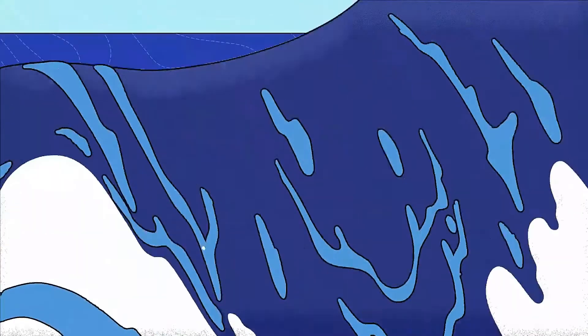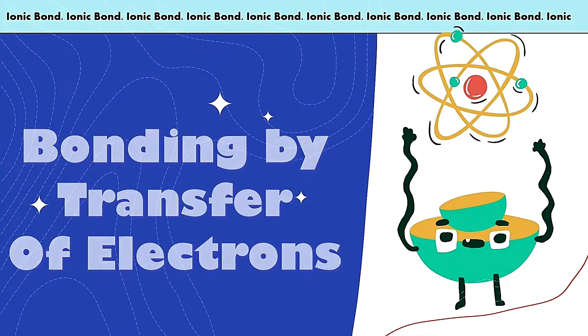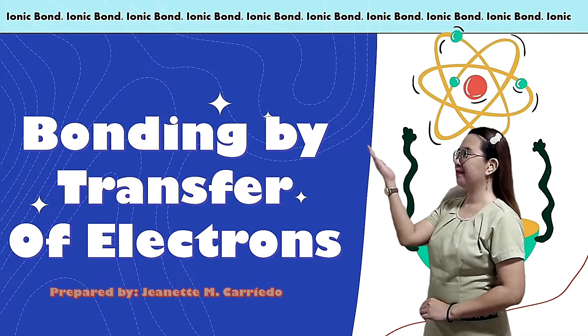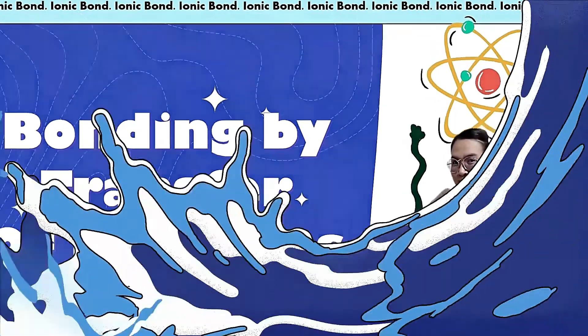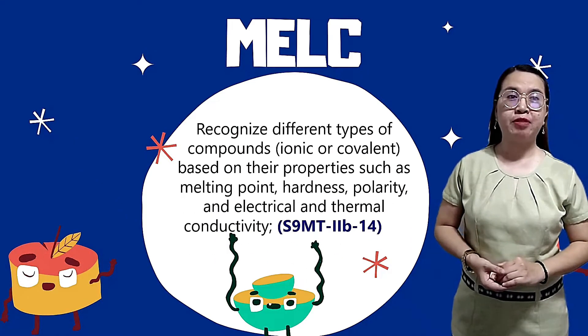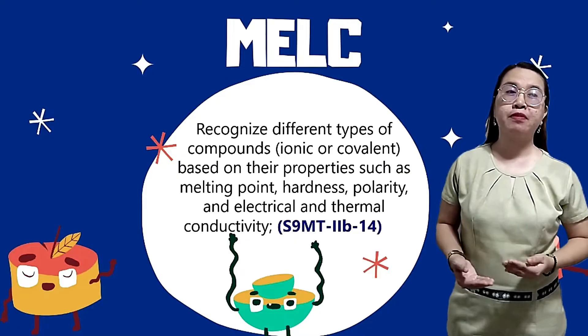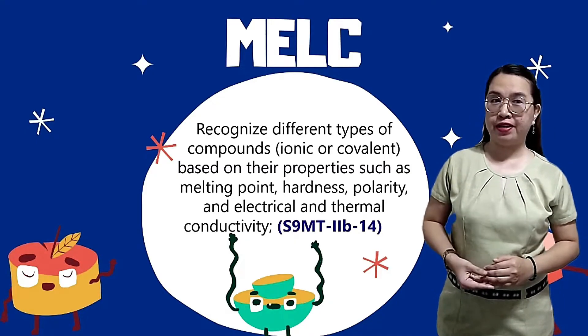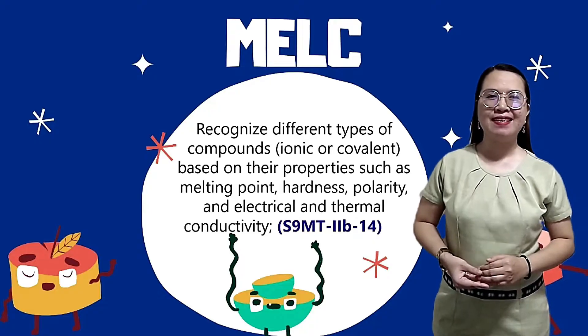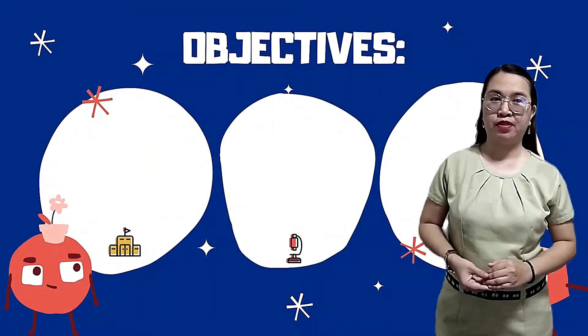Our lesson for today is Bonding: The Transfer of Electrons. Our learning competency is: we recognize different types of compounds, ionic or covalent, based on their properties such as melting point, hardness, polarity, and electrical and thermal conductivity. We also have the following objectives for today's topic.